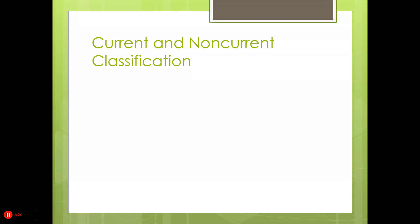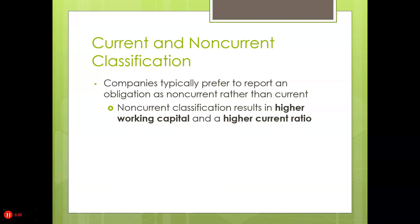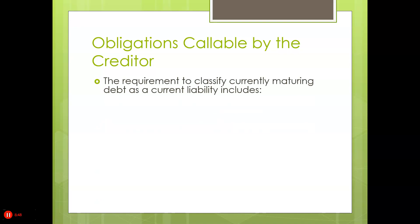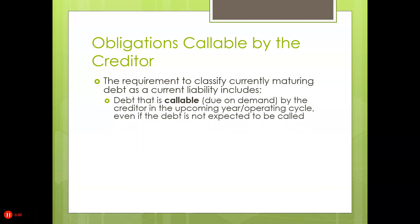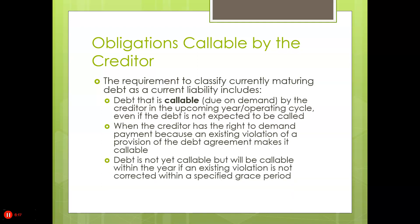Now let's look at current and non-current classifications. Companies typically prefer to report an obligation as non-current rather than current because of its effect on ratios. Non-current classifications result in higher working capital and a higher current ratio. One thing to think about is callable options. The requirement is to classify currently maturing debt as a current liability if the debt is callable on demand by the creditor in the upcoming year or operating cycle, even if the debt is not expected to be called. This also applies when the creditor has the right to demand payment because an existing violation of a debt agreement makes it callable, or the debt is not yet callable but becomes callable within the year if an existing violation is not corrected within a specified grace period.